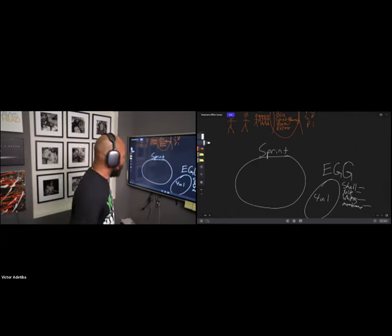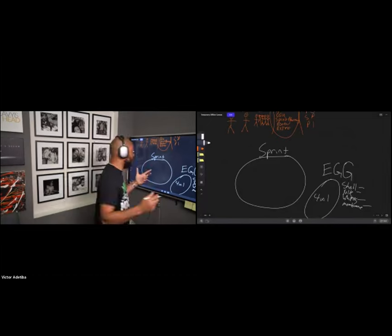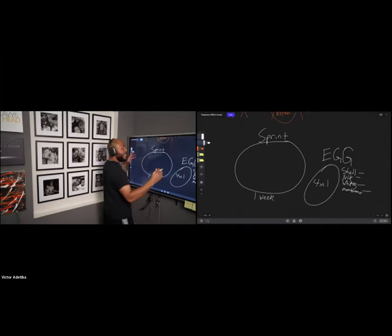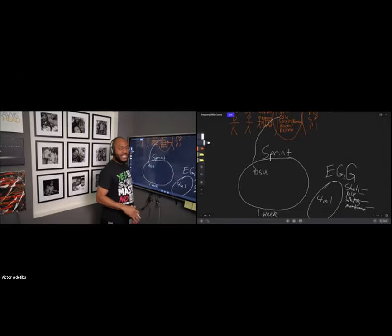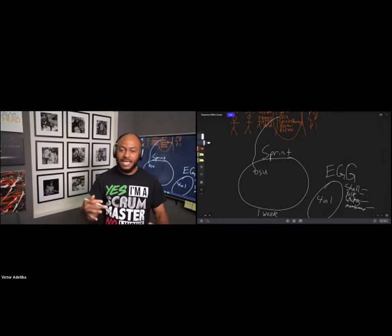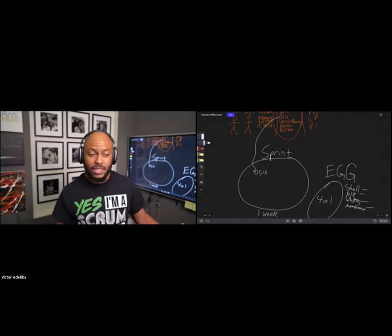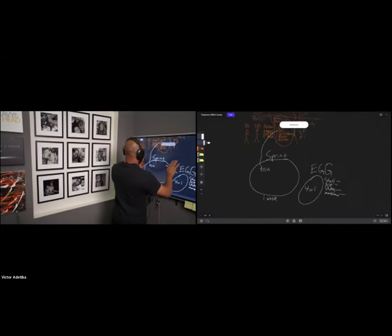Five in one — because within the confines of this sprint, in our program we've got one-week sprints. Within the sprint, the other things that happen include the daily standup. The daily standup is a 15-minute time-boxed event that happens every day of the sprint. It's an opportunity for the development team to collaborate and talk about progress towards the sprint goal — everything they've committed to in the sprint backlog.